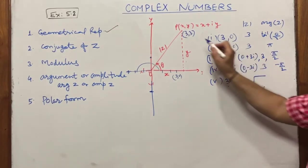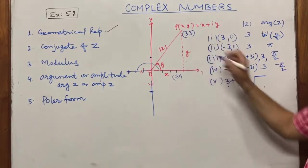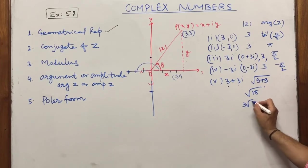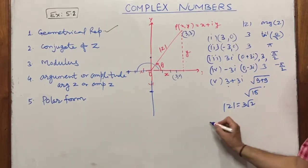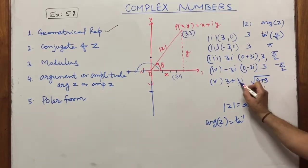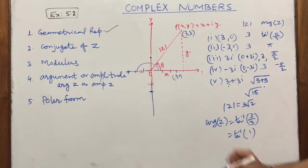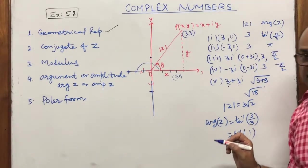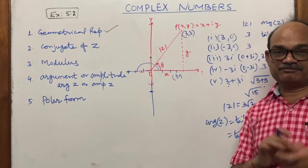For the complex number 3 + 3i, the modulus is √(3² + 3²) = √18 = 3√2. The argument is tan⁻¹(3/3) = tan⁻¹(1). Since both parts are positive, the number is in quadrant 1, so the argument is π/4.